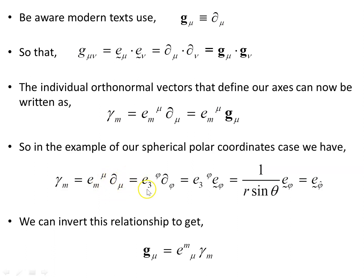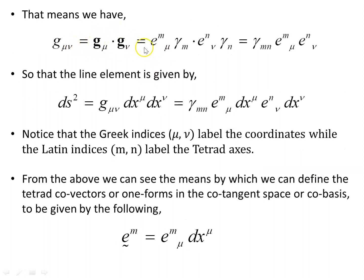We can invert this relationship to get g_mu by itself times a scalar. Notice the arrangement of indices: m is up and mu is down here, whereas before m was down and mu was up. There is an inverse to this, and from it the metric g is the dot product of the appropriate basis vectors. The line element ds squared follows from this and hints at another object we can extract shortly.